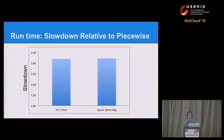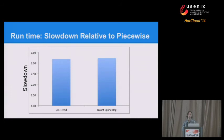Another motivation to pursue the piecewise approach was that the B-spline took three times as long to process, essentially having to load the entire year's worth of data. The speedup from doing piecewise was very significant.